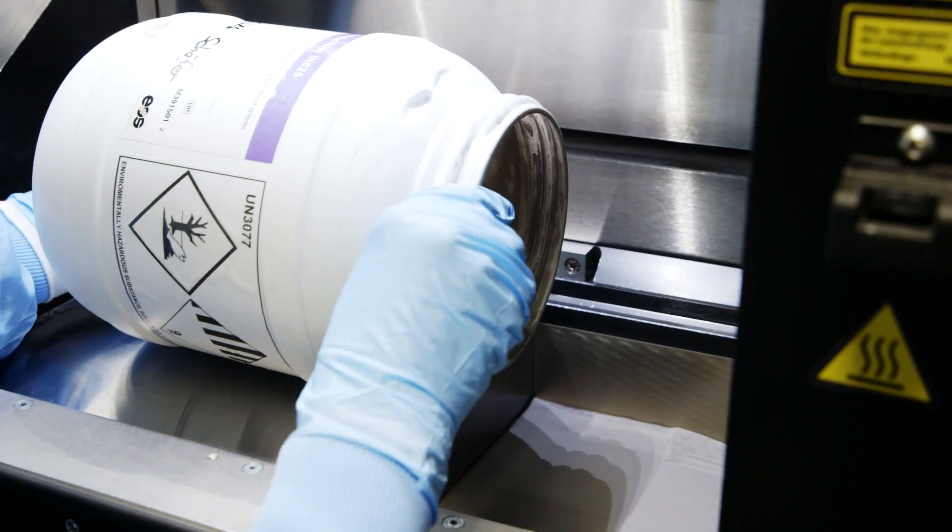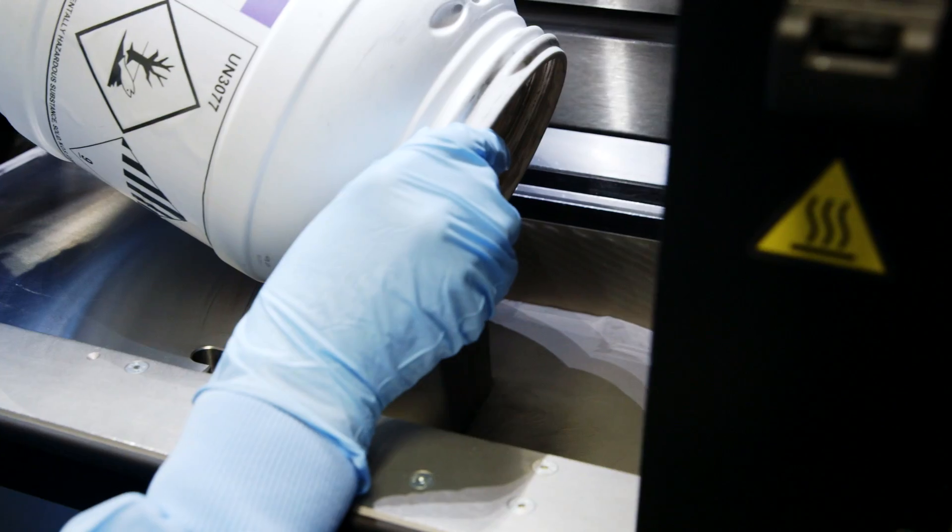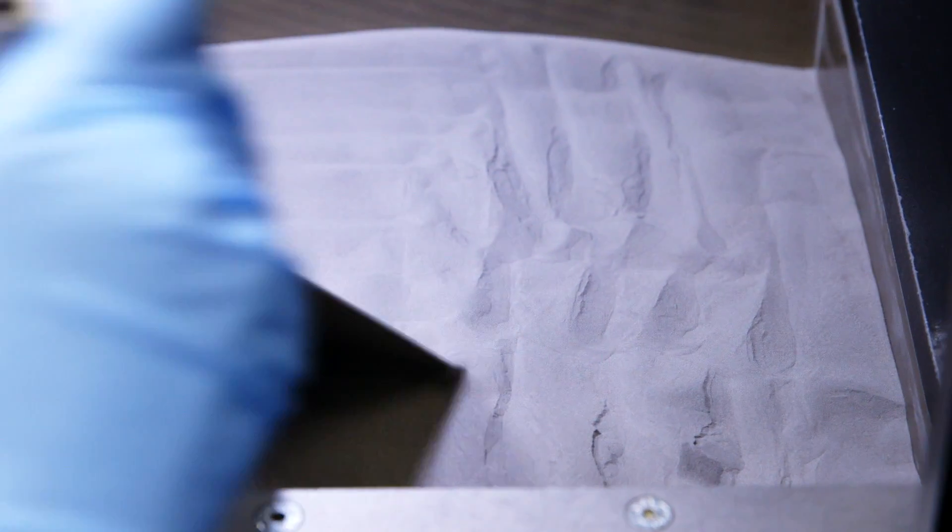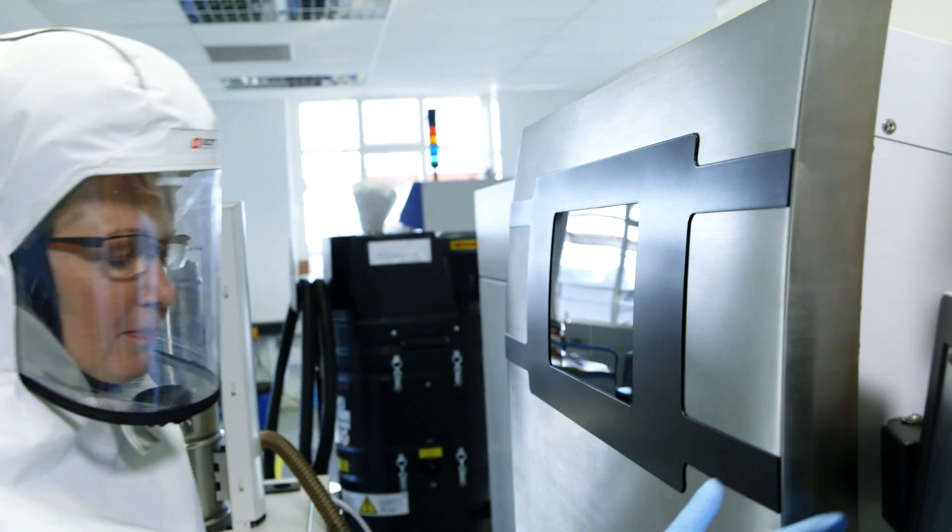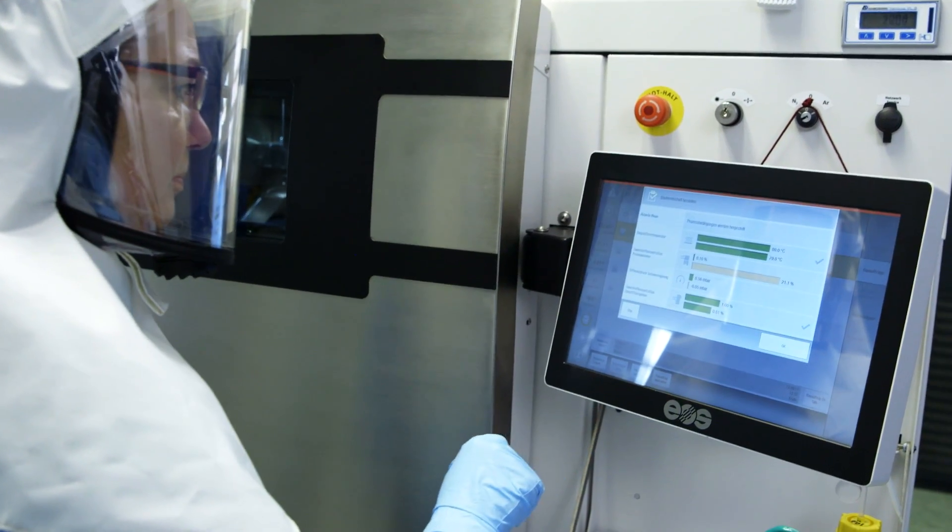As things currently stand in technical terms, I need to take an iterative approach to find the right solution. That means I need to vary the printing parameters to ultimately achieve the desired geometry and corresponding material properties. This does not usually work the first time.